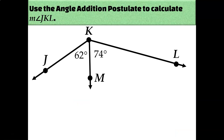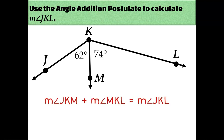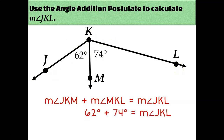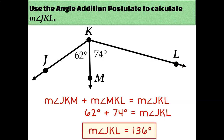Go ahead and pause the video and see if you can figure out the measure of angle JKL. According to the angle addition postulate, the measure of angle JKM plus the measure of angle MKL equals the measure of angle JKL. So 62 plus 74 equals the measure of angle JKL, and therefore the measure of angle JKL is 136 degrees.